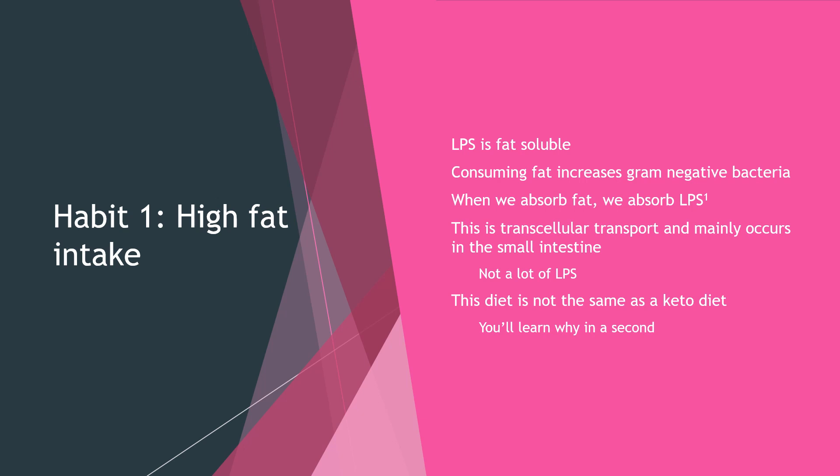Habit one: high fat intake. LPS is fat soluble, meaning it can cross through our cells, and when we consume fat, that actually helps that process. Additionally, consuming fat in your diet increases gram-negative bacteria, which correlates tightly to the amount of fat you eat — the more fat you eat, the more gram-negative bacteria in your gut. When we absorb fat, we absorb LPS. Both fat and LPS can cross cell membranes because they're both fat soluble, and they are packaged together in something called a chylomicron, which we absorb during subsequent meals. This is the definition of transcellular transport and mainly occurs in the small intestine.